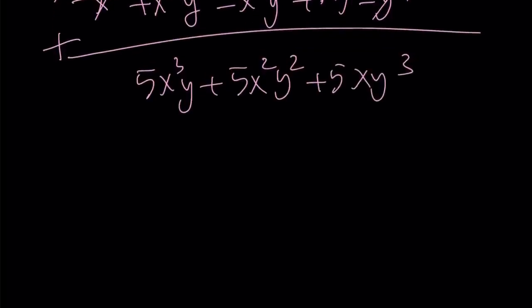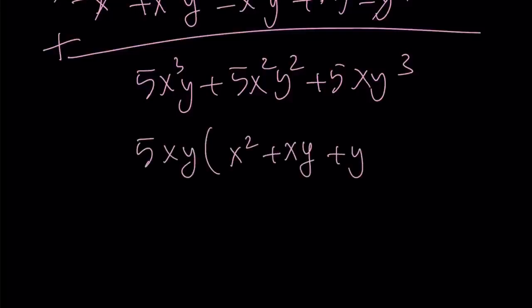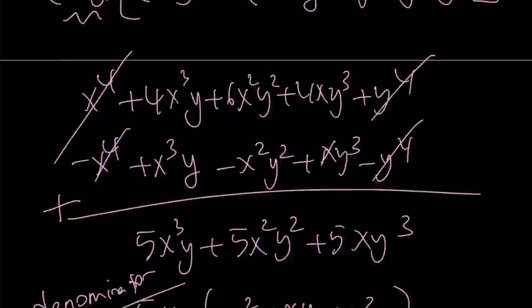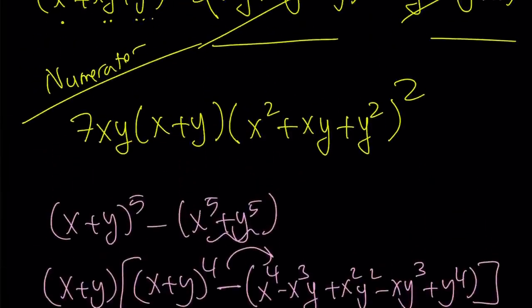We can take out a five x y and get x squared plus x y plus y squared. I hope that looks familiar. And this is going to be my denominator.